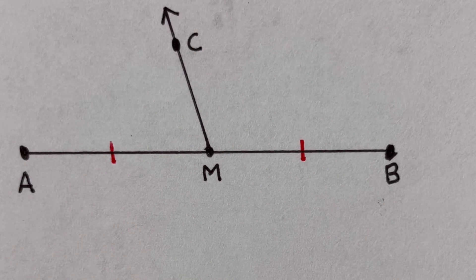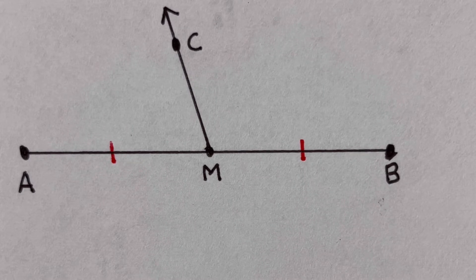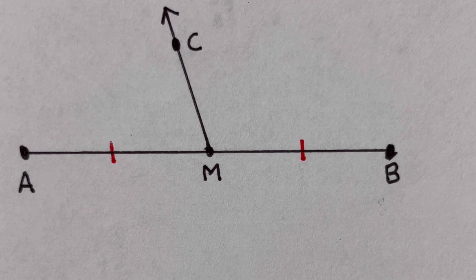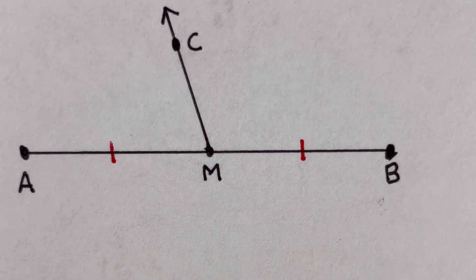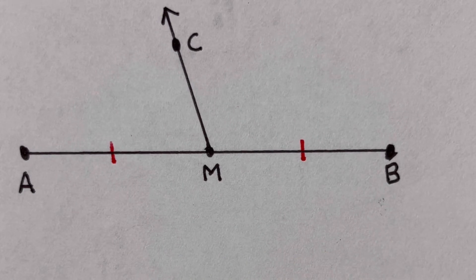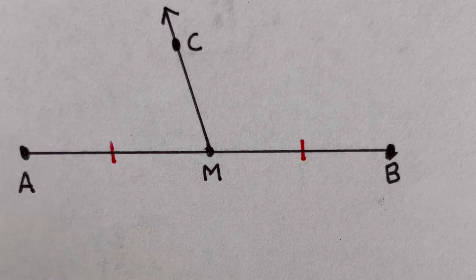— it still has to be forming a 90-degree angle, or be perpendicular to the given line segment, and at the same time be a bisector. Both conditions must be met in order to say that a given ray, line, or plane is a Perpendicular Bisector. So, Ray CM is not a Perpendicular Bisector to segment AB.